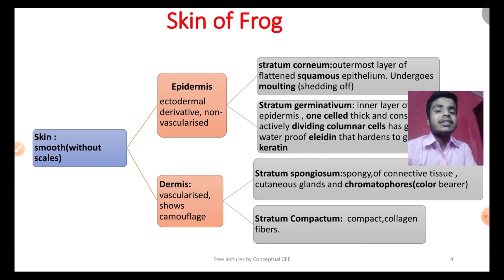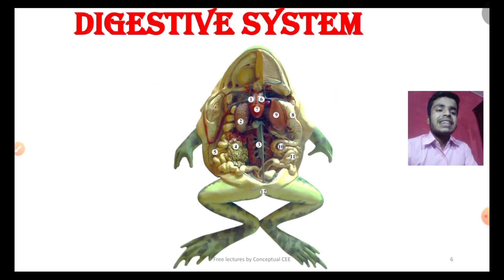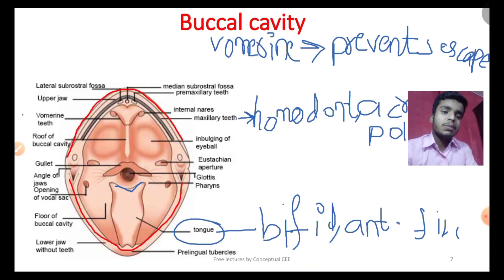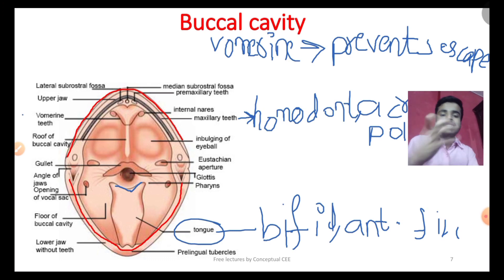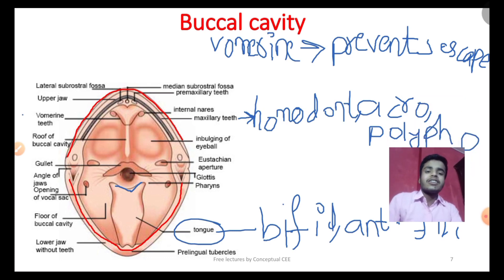Next, the digestive system. The main structures to remember: the maxilla, or upper jaw, has teeth. There is no dental formula as such — the teeth are homodont, acrodont, and polyphyodont. The tongue is bifid, anteriorly fixed, and retractable. The lower jaw is movable.